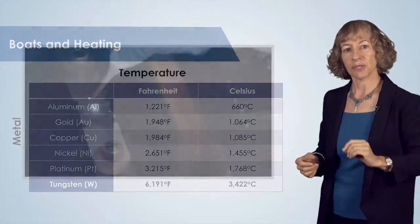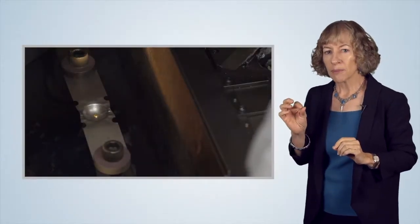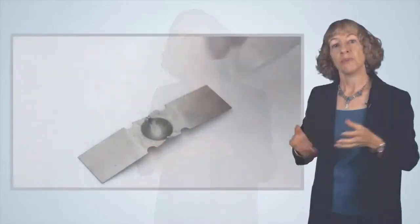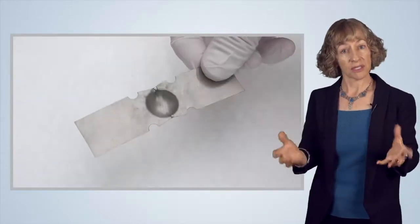To conduct a thermal evaporation, a small amount of our source material is placed into a container called a boat. The boat is heated by passing a large electrical current through it to heat it up in a process called resistive heating. The boats that we use are typically tungsten.